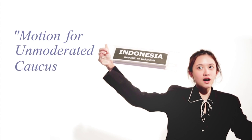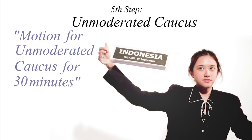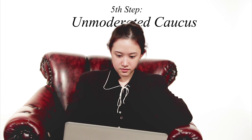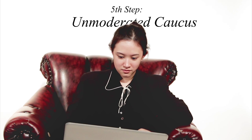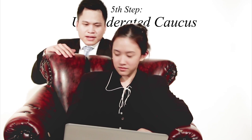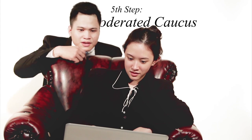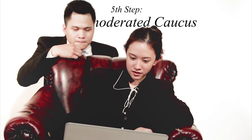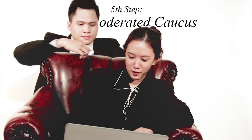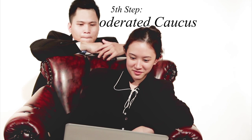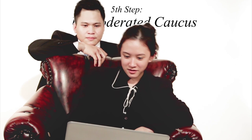Motion for Unmoderated Caucus for 30 minutes. Fifth step: Unmoderated Caucus. This is a type of caucus that allows delegates to move around and talk in an informal manner with fellow delegates. The delegates are given the time to speak their mind freely and express ideas that were unable to be expressed during Moderated Caucus.